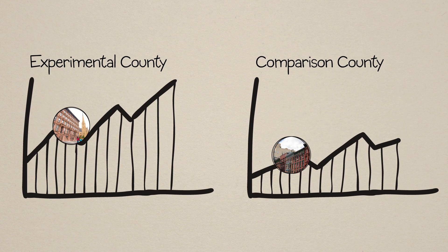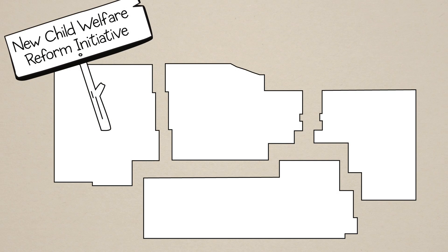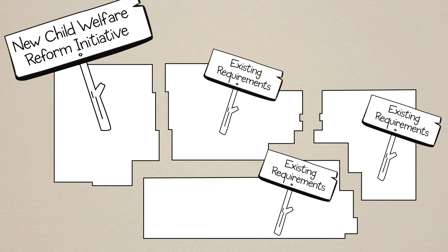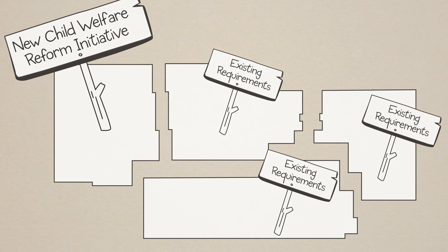Differences in outcomes between the experimental and comparison counties are then tracked and compared over time. A situation in which a comparison site design might work could involve a county experimenting with a new child welfare reform initiative, like a new caseworker visit policy, while counties in the rest of the state continue to operate under existing requirements.